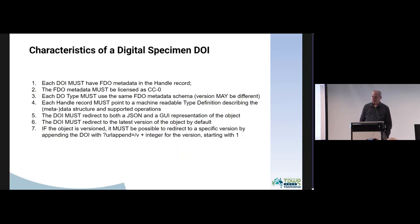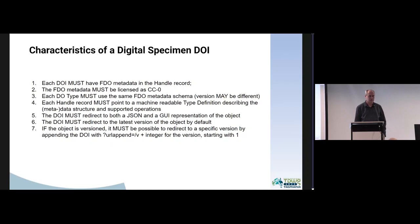Some characteristics of the digital specimen DOIs: each DOI for a digital specimen must have this metadata in the handle record; it must be licensed as CC0 — the data itself may have a different license, but the metadata should be CC0. Each DOI type must use the same metadata schema but may be of a different version. Each handle record must point to a machine-readable type definition describing the data structure and supported operations, so each specimen could have a different data structure but you can retrieve that structure. It must redirect to both a JSON and HTML representation, and if versioned, must support redirect to a specific version.